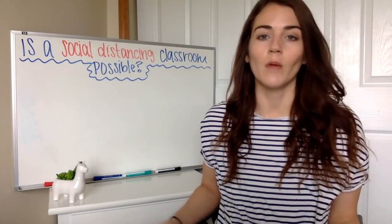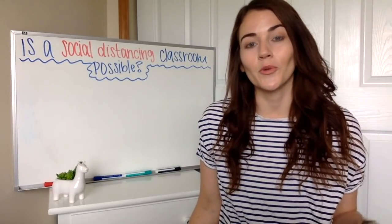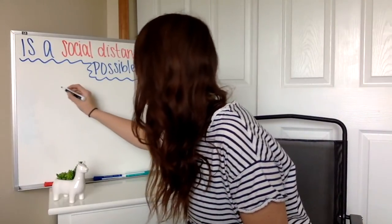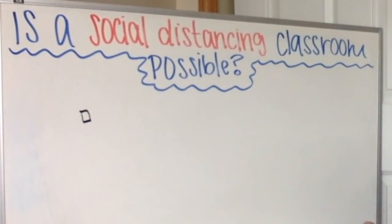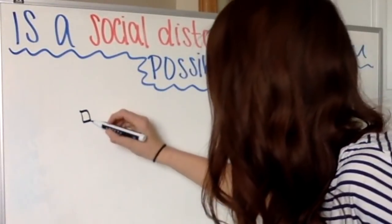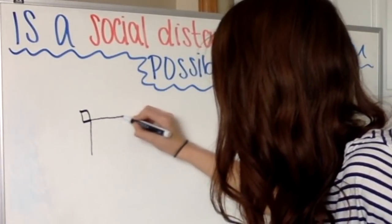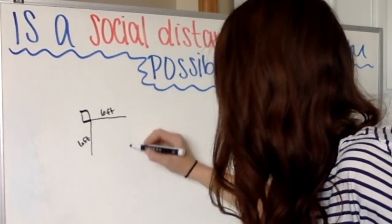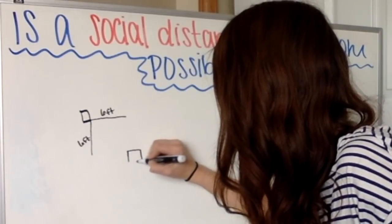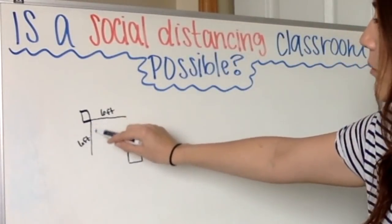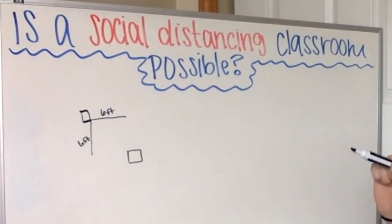Whenever I see a word problem or something I'm turning into a word problem, I always start with a picture. So I thought about: here's our door, let's say the door is right here — that's the corner of our classroom. I know our desks have to be six feet apart, so it's going to have to be six feet this way and six feet this way. Wherever that is, that's where my first desk is going to have to be, because someone's going to have to be able to walk into the room without being within six feet of the person at that desk.